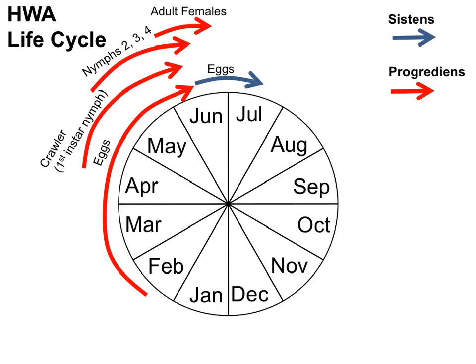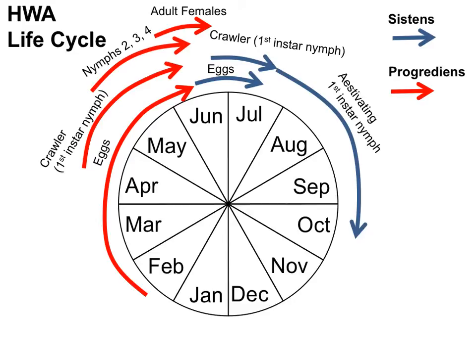Out from the sistens eggs hatches sistens crawlers, or first instar nymphs. These nymphs settle at the base of the needles on the youngest branches they can find. The sistens crawlers, once settled, go into a dormant state. Dormant states in insects are called diapause. When diapause occurs in the summer, it's called estivation.